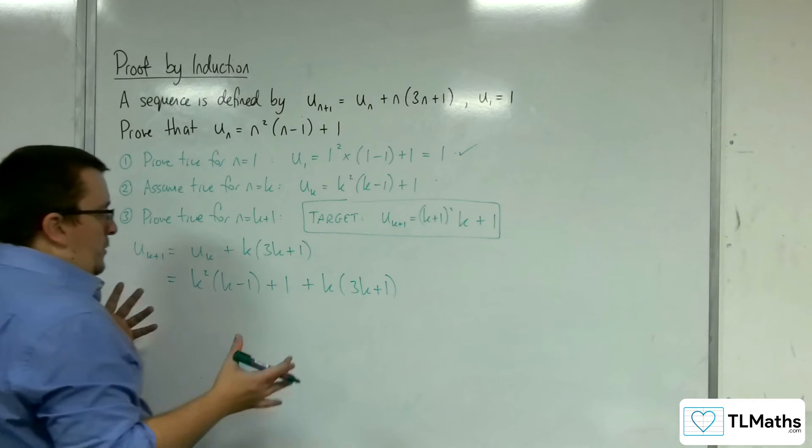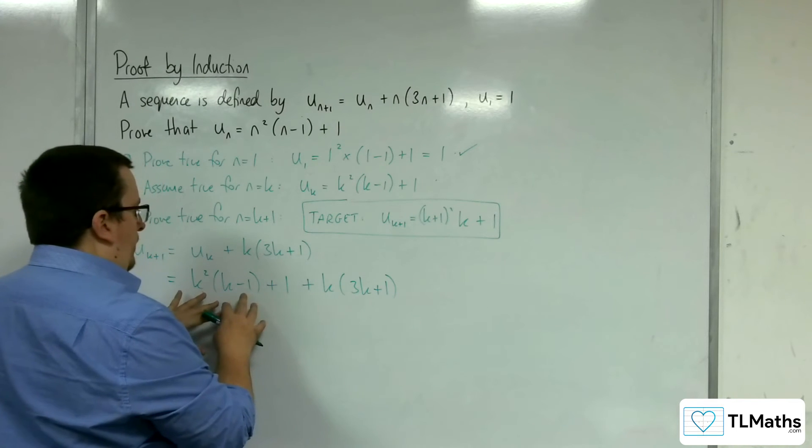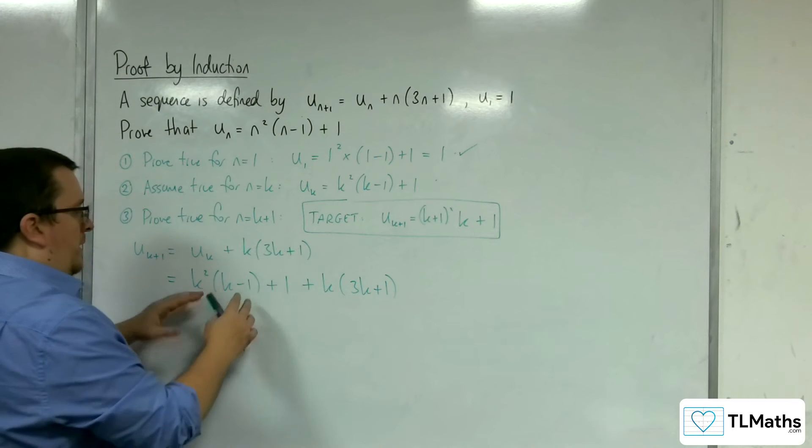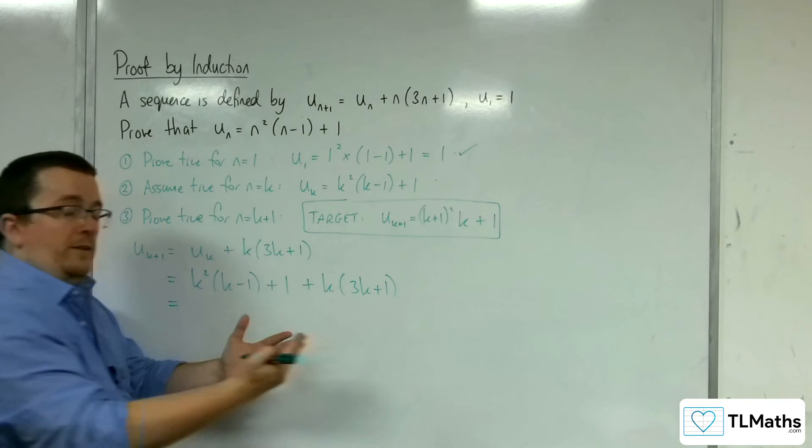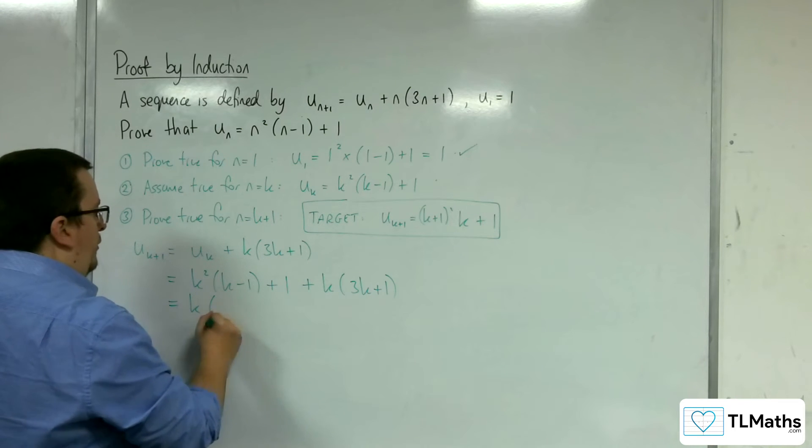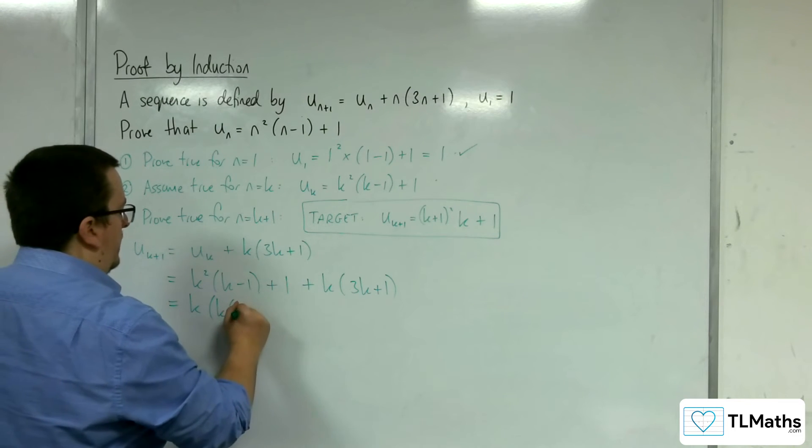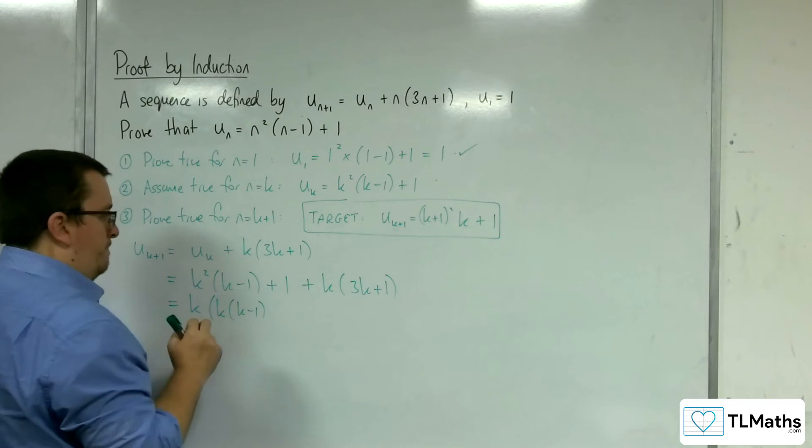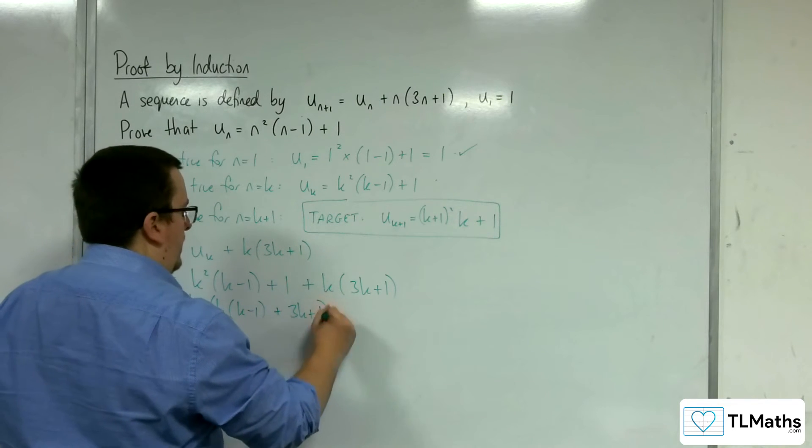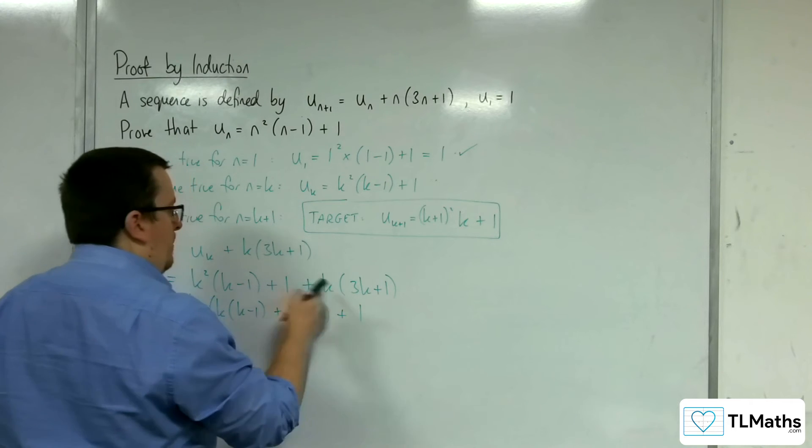So what I can do is I can ignore that plus 1 for the moment. I'm going to keep that on the right-hand side. I'm going to look at these two terms, and I can factor k out of both of those. So I'm going to have k lots of k(k-1), from there, plus the 3k+1. Close the bracket, and I've still got that plus 1 on the end.